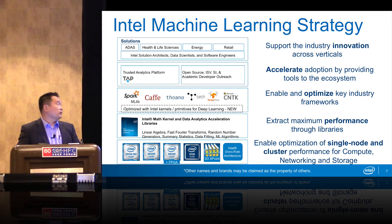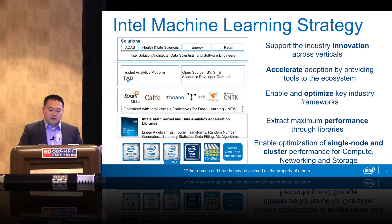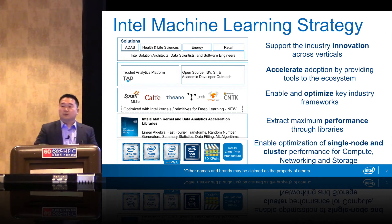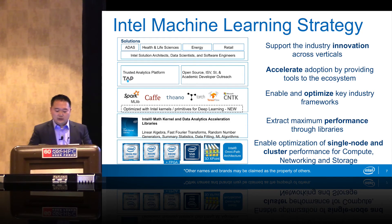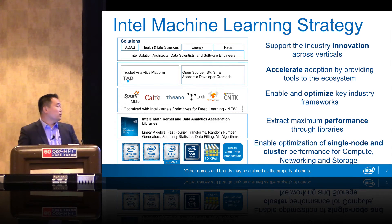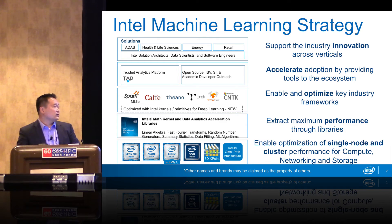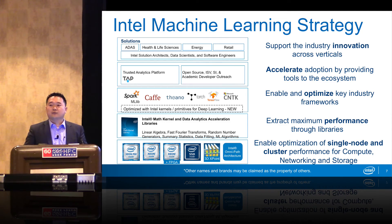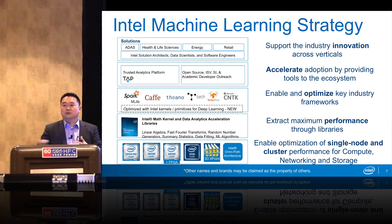We're enabling and optimizing key industry frameworks — Spark, as our friends at IBM mentioned, Caffe, Theano, and a number of different key industry frameworks. We want to extract maximum performance through our libraries such as Math Kernel Library, or MKL, and Data Analytics Acceleration Libraries, or DAL. Whether it's single node or a cluster, we have the compute, networking, and storage to support that — whether it's Xeon Phi, Xeon, FPGAs, SSDs, upcoming 3D XPoint, or our OmniPath architecture. We have scalable solutions developed for machine learning.